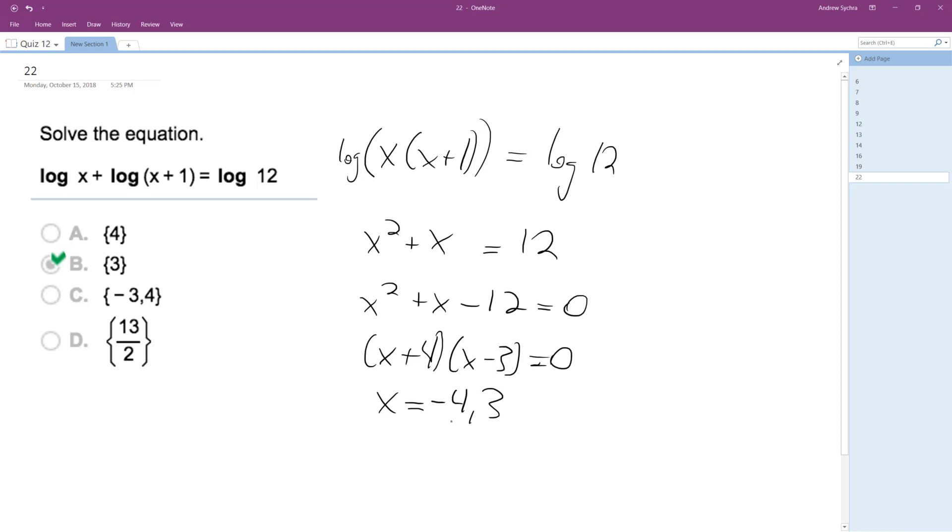We've got to test each of these solutions out. With logarithms, you can't have anything less than zero. For a standard logarithm, anything less than zero doesn't exist. So in this case, it's only going to be 3 as a solution because that's the only one where it stays above zero.